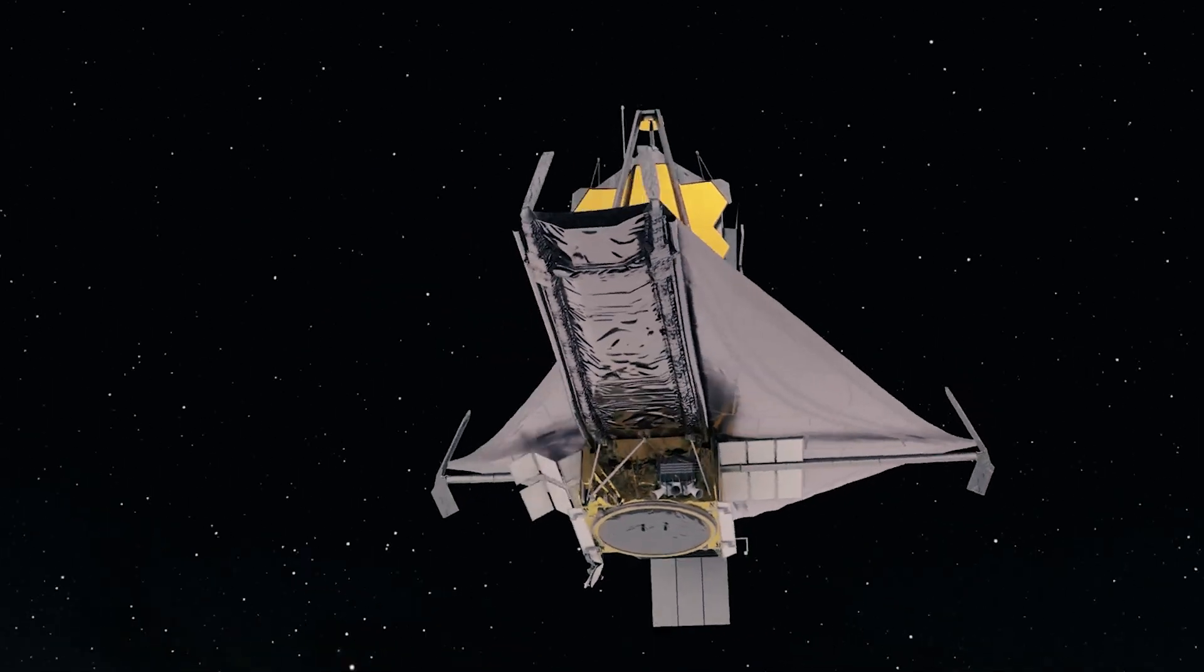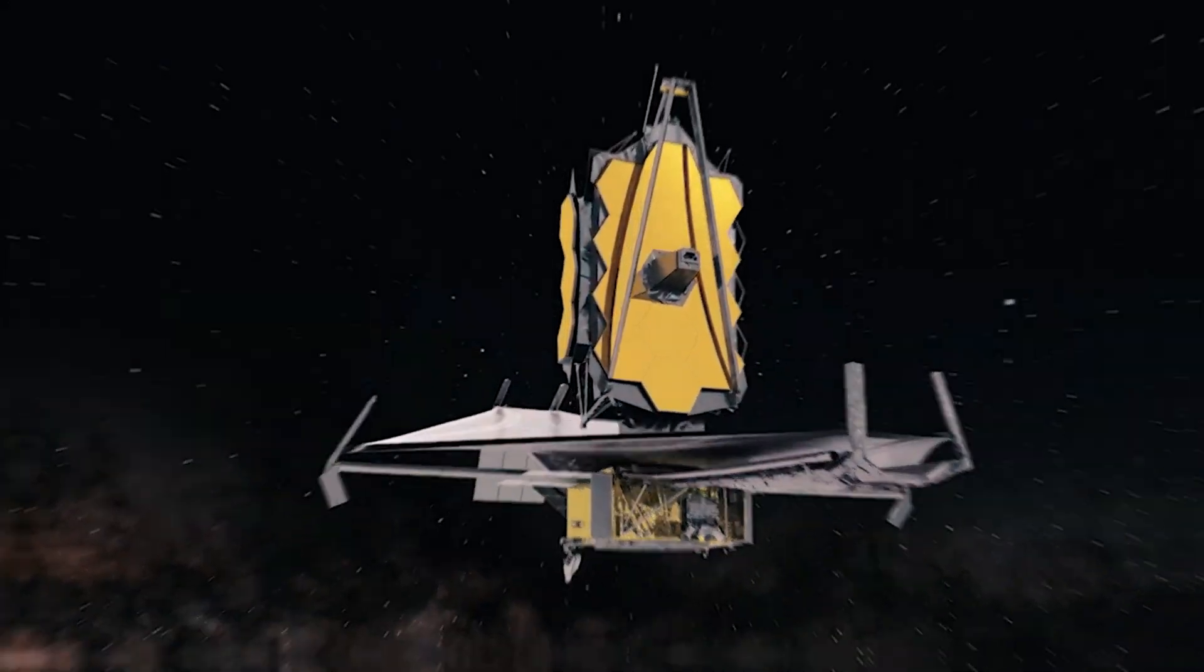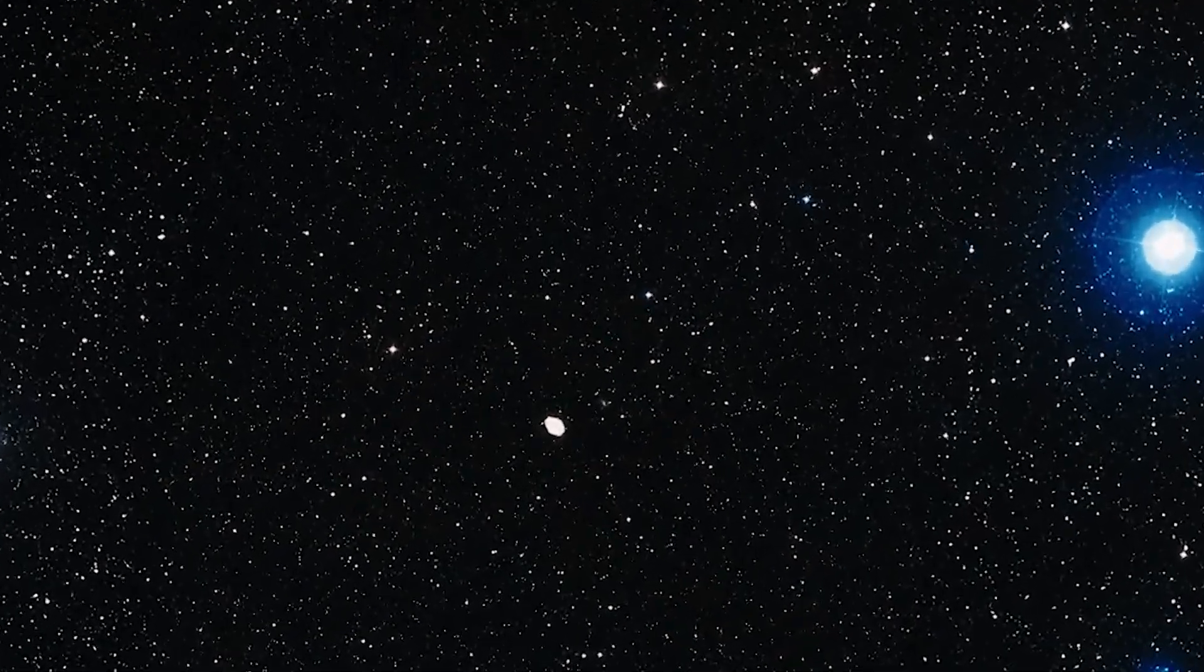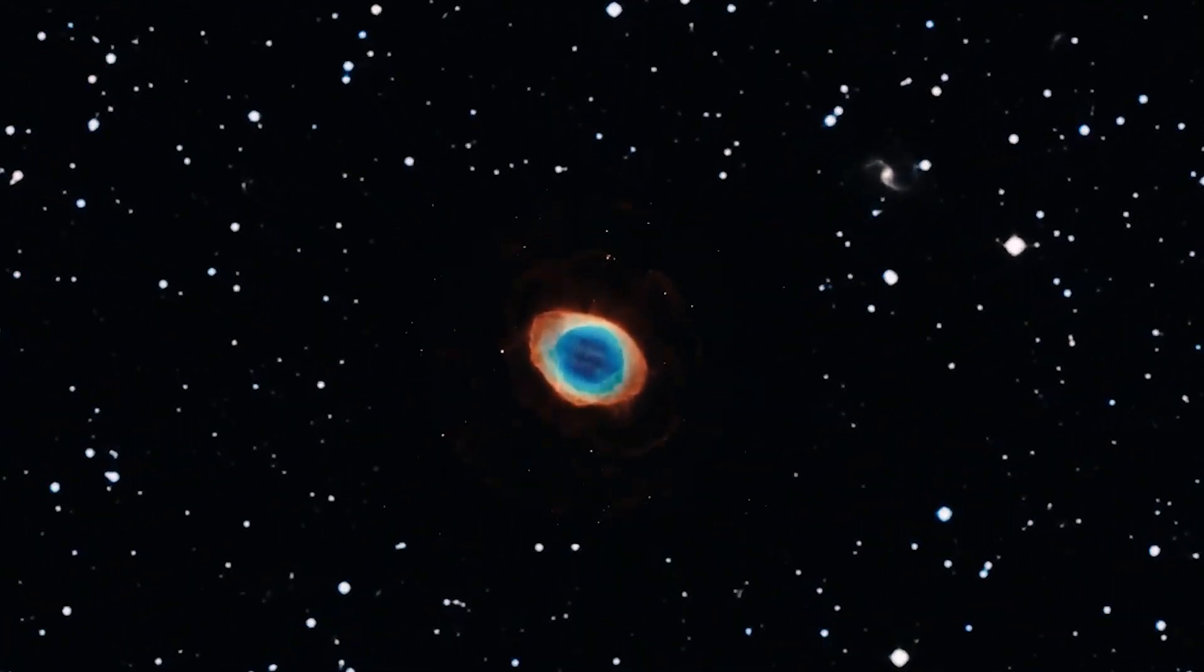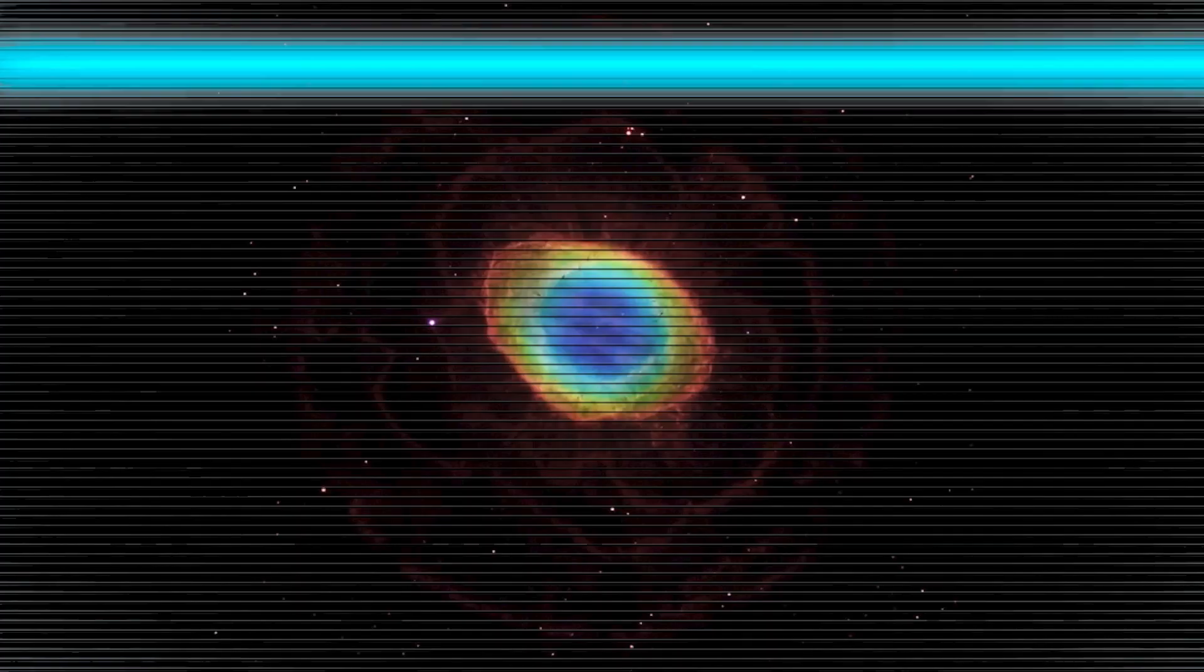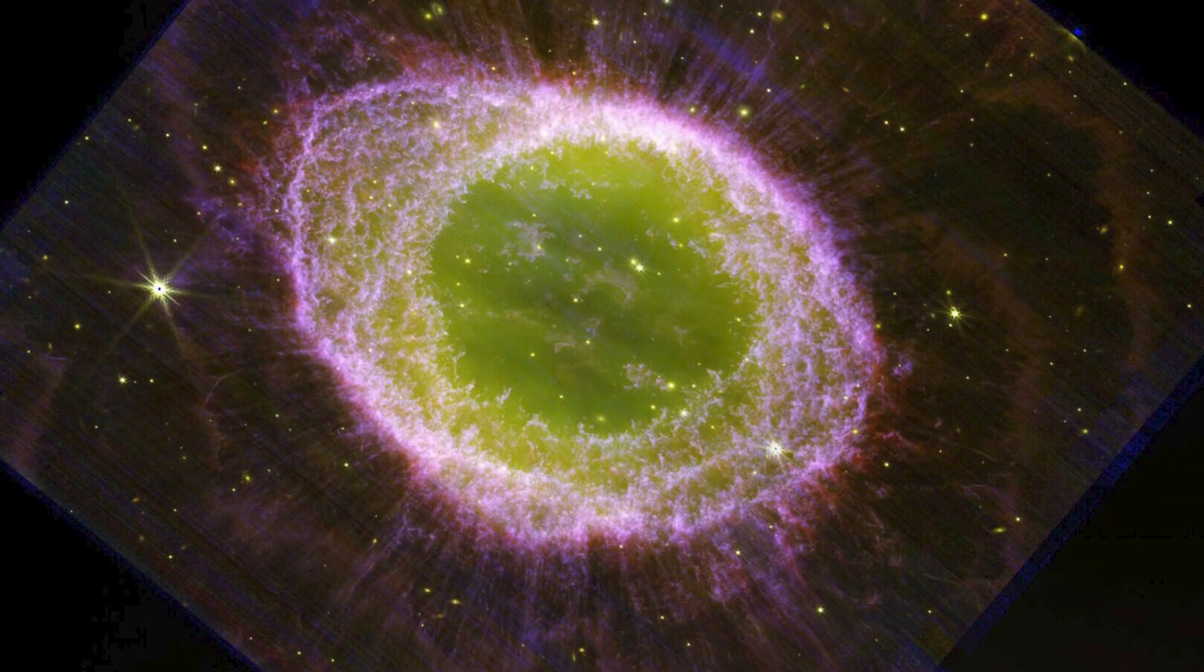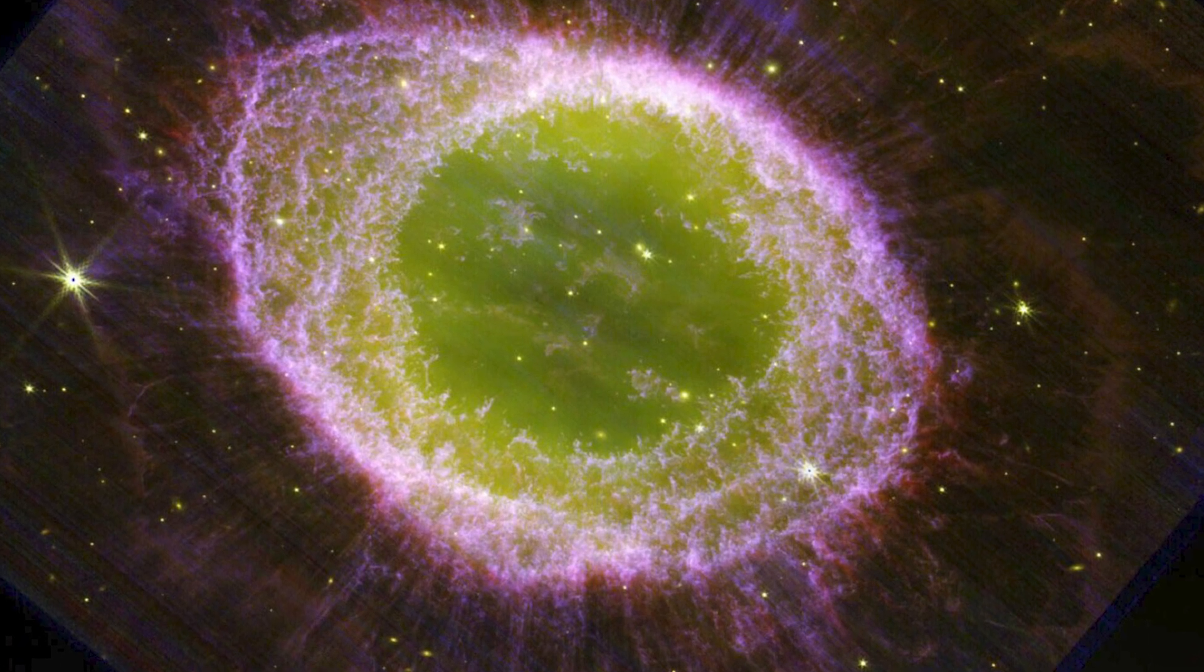The James Webb Space Telescope, JWST, has unveiled captivating images showcasing the twilight moments of a distant star's existence. These mesmerizing snapshots have captured an unparalleled level of intricacy within the Ring Nebula, a donut-shaped halo of luminous gas.